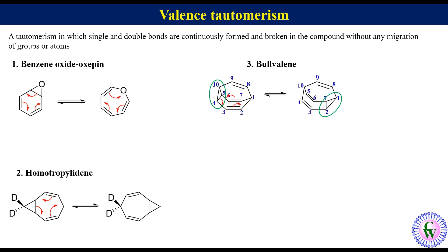So the number of valence tautomers in this case will be factorial 10 upon 3, that will be equal to 1,209,600.